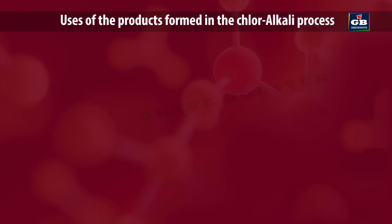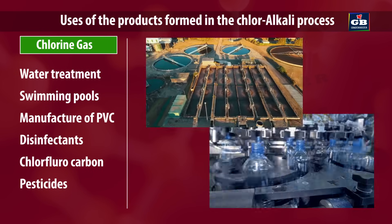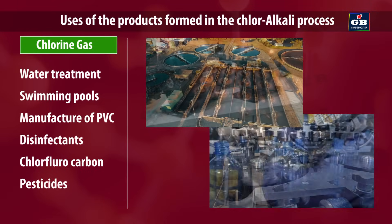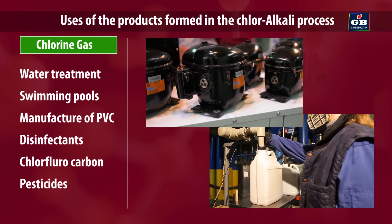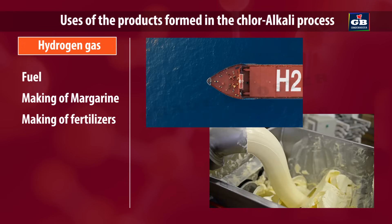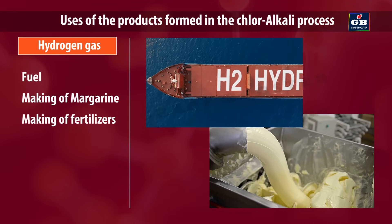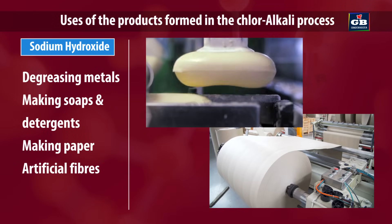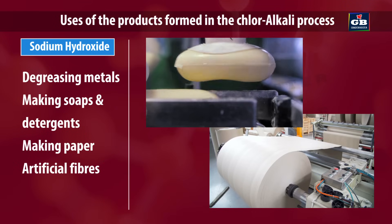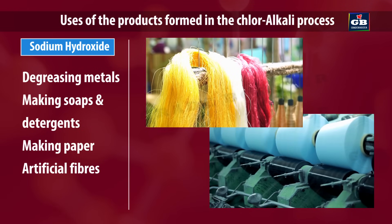Uses of the products formed in the chloralkali process. The chlorine gas produced can be used for water treatment, swimming pools, manufacture of PVC, making disinfectants, chlorofluorocarbons and pesticides. The hydrogen gas produced can be used as a fuel and in making margarine and fertilizers. The sodium hydroxide produced is used in degreasing metals, and also in making soaps, detergents, paper and artificial fibers.